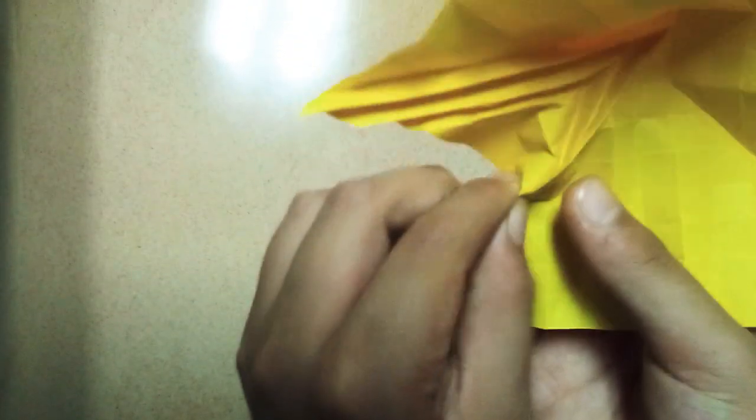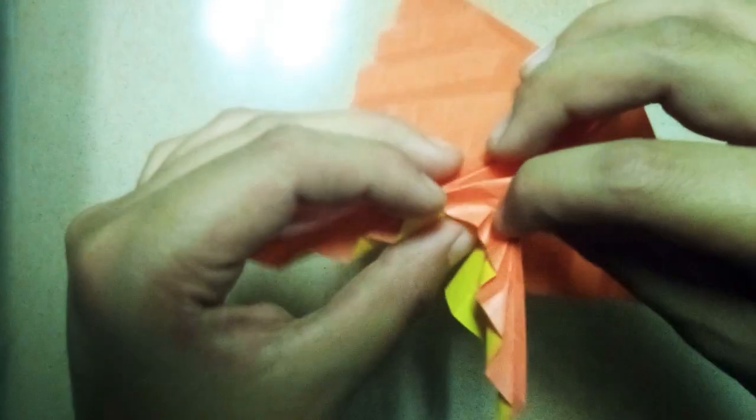Turn it over. And now 1, 2, 3, 4 squares. 1, 2, 3, 4 squares. On this side, 1, 2, 3 squares. And I also recommend using larger paper just to make this a little easier. 2, 3, 1, 2. 1, 2. And just make a reverse fold right at the end of this part.